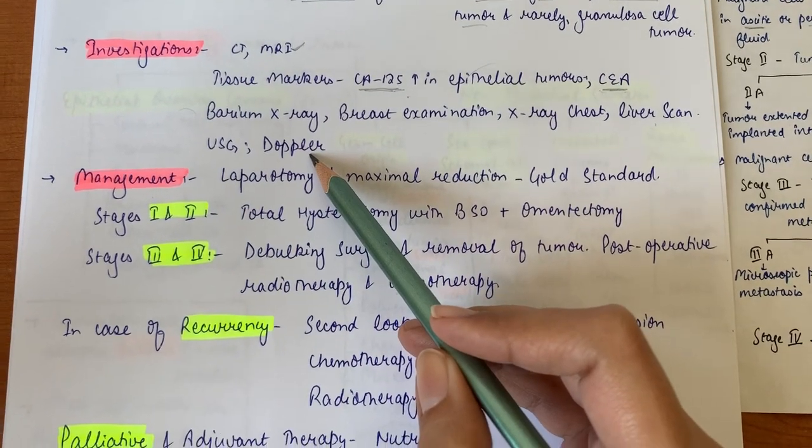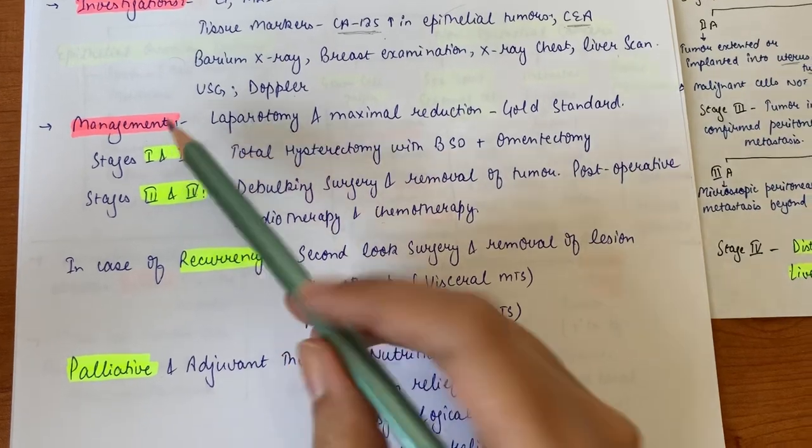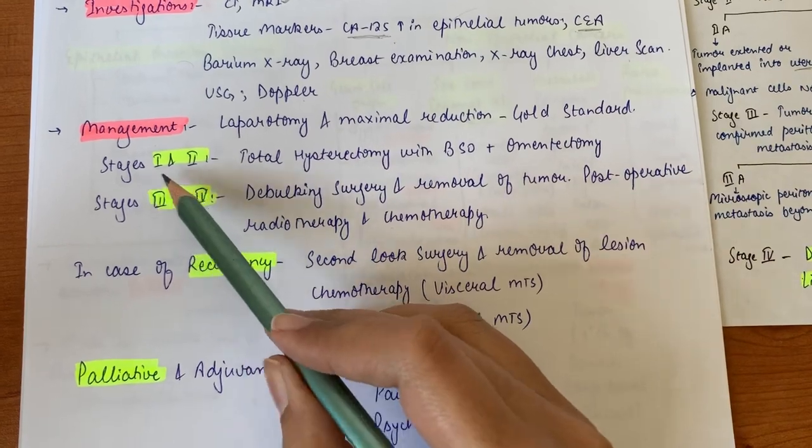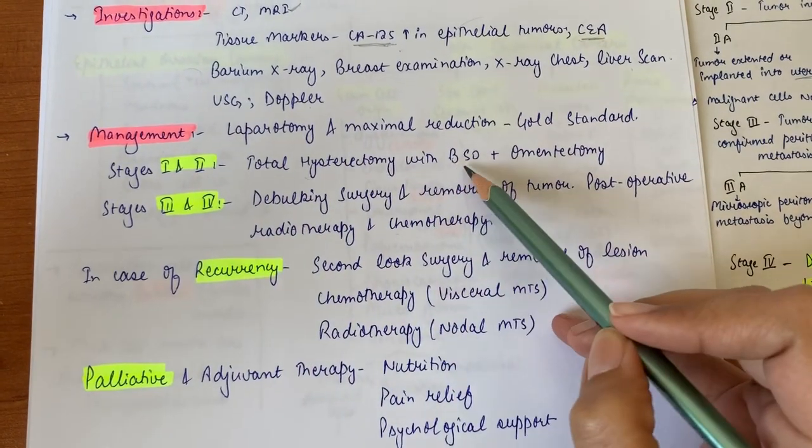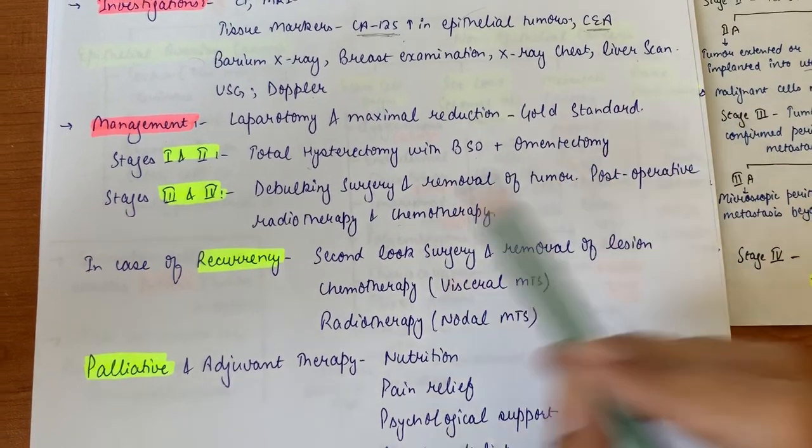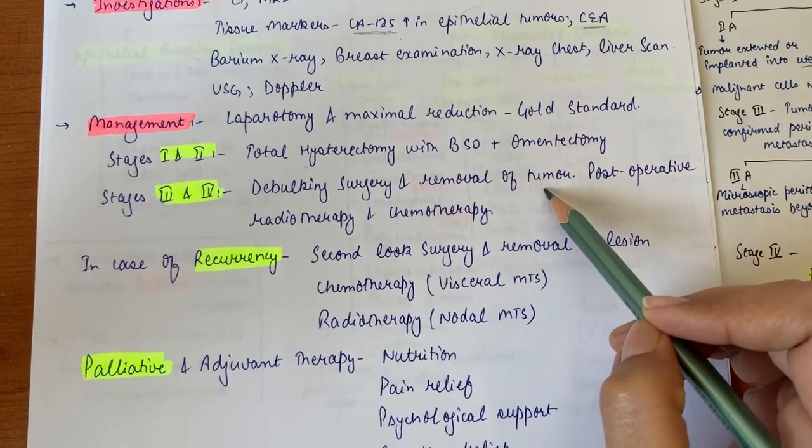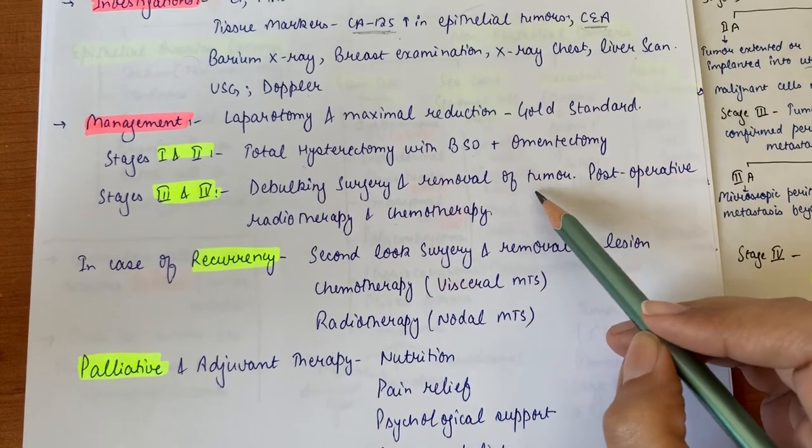For management, laparotomy and maximal reduction of tumor is the gold standard. Management is done according to stages. In stages one and two, total hysterectomy with bilateral salpingo-oophorectomy combined with omentectomy. In stages three and four, only debulking surgery and removal of tumor is done. Debulking surgery is done to reduce pressure symptoms.